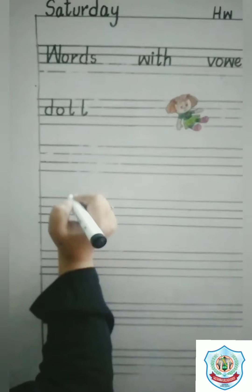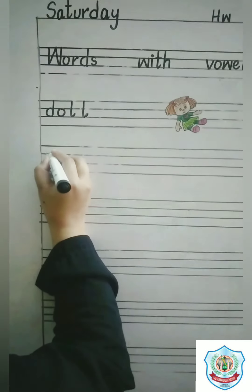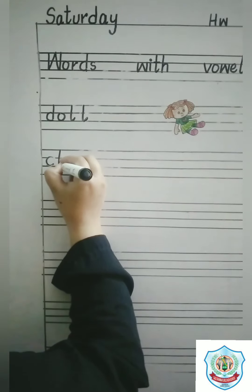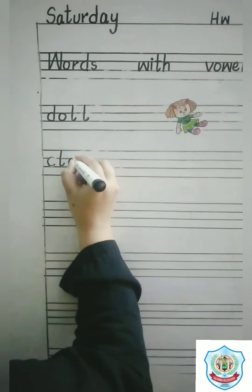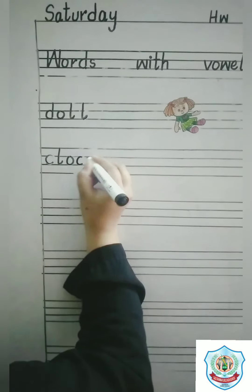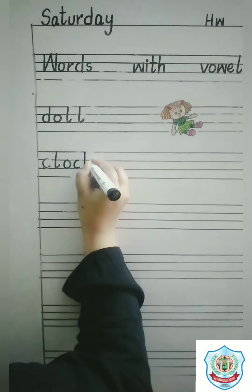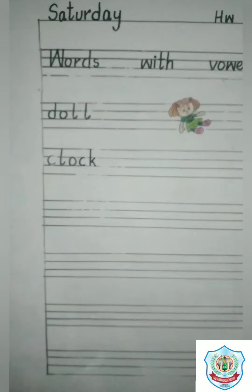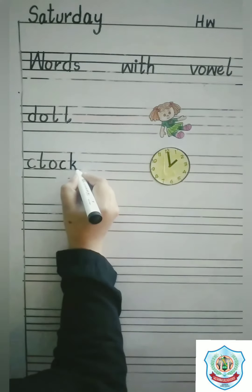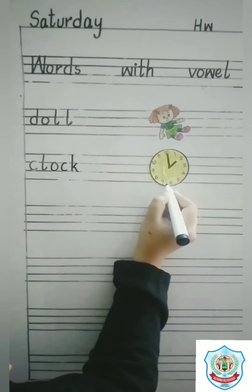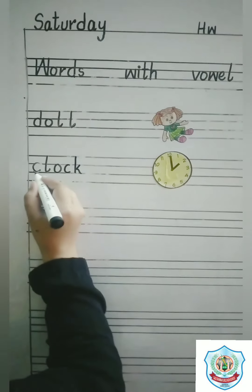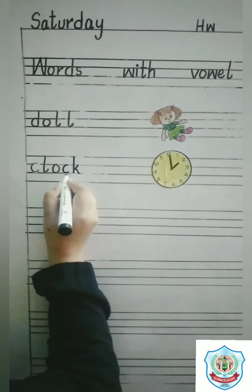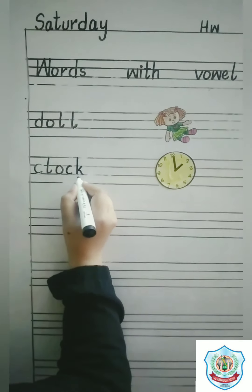Next word is Clock. C has a sound K. L, O, C, K — CK makes a sound K. Clock. And this is a picture of a clock.